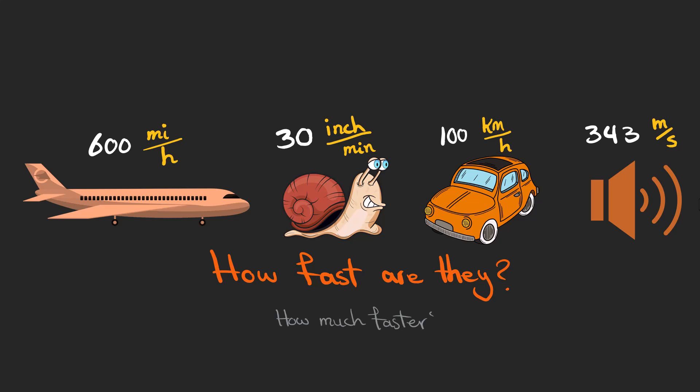But when it comes to comparing them, it's not exactly clear how much faster a plane is than a snail. You might be tempted to divide 600 by 30 and get 20 times as an answer. But something feels wrong here because you haven't paid attention to these scales by which the speeds are expressed.